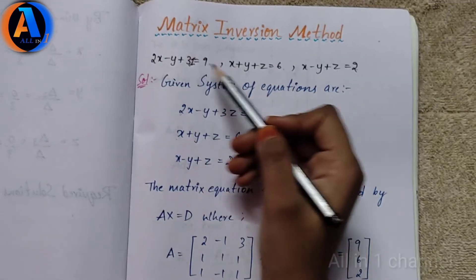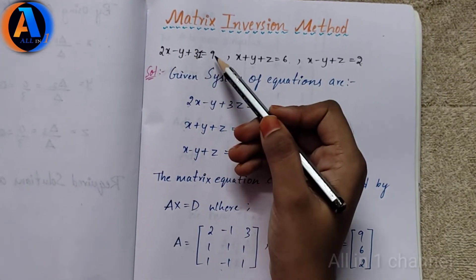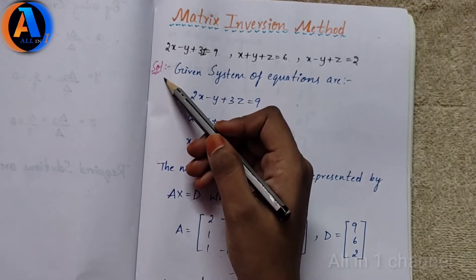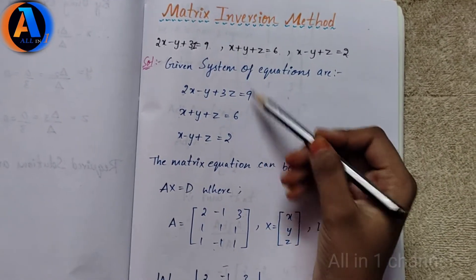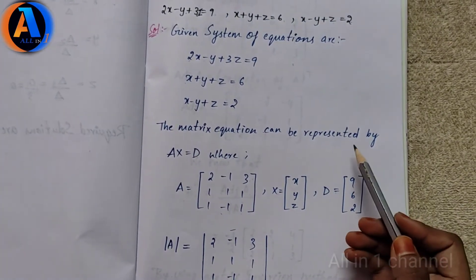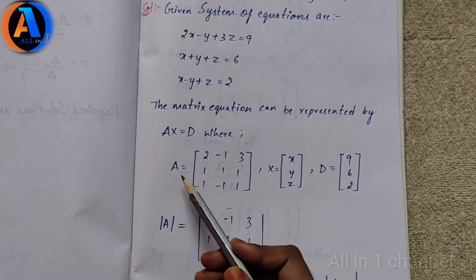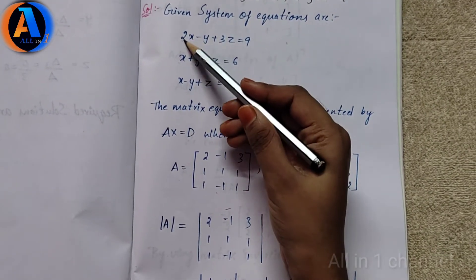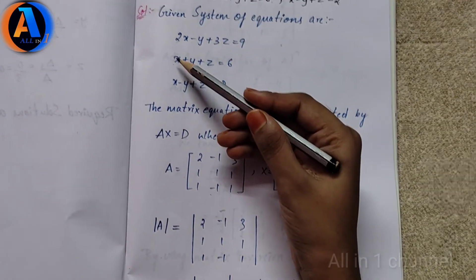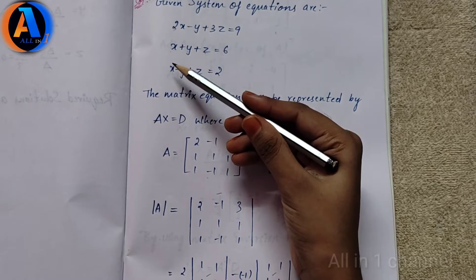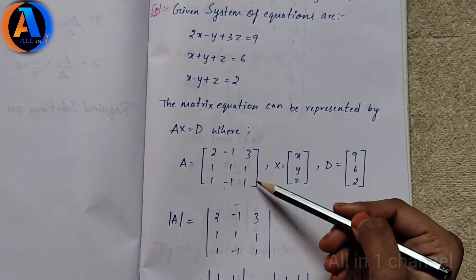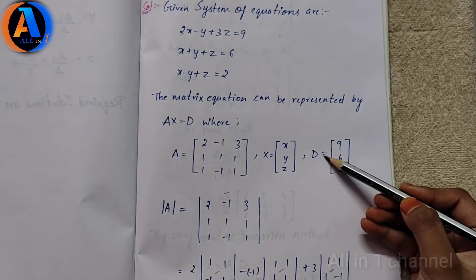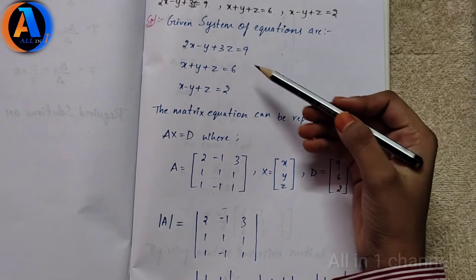Matrix inversion method. Given equations are: 2x minus y plus 3z equal to 9, x plus y plus z equal to 6, x minus y plus z equal to 2. The matrix equation can be represented by AX equal to D, where A contains the coefficients: first row [2, -1, 3], second row [1, 1, 1], third row [1, -1, 1]. X equals the variables [x, y, z] and D equals the constants [9, 6, 2].